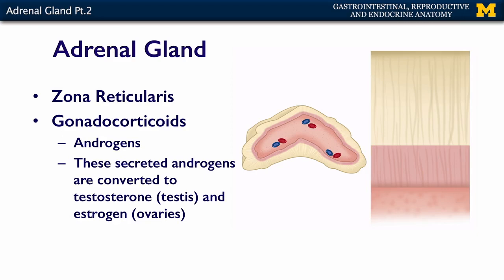The innermost layer of the adrenal cortex is the zona reticularis. The zona reticularis is responsible for creating and secreting gonadocorticoids — hormones that are going to be transferred to the gonads, the ovaries or the testes, for further processing. The zona reticularis secretes androgens, and these androgens are then converted to testosterone by the testes or estrogen by the ovaries.